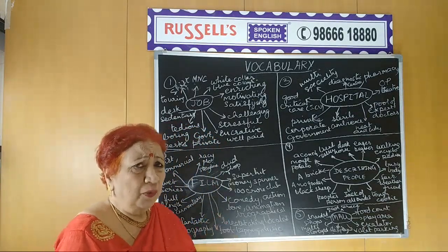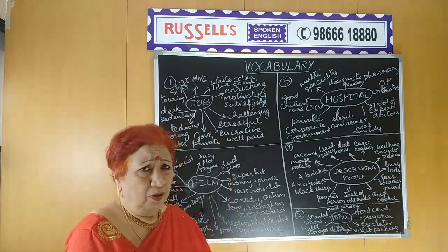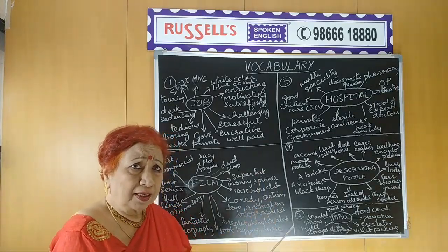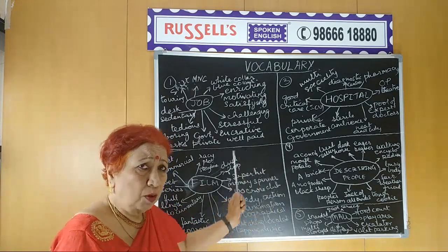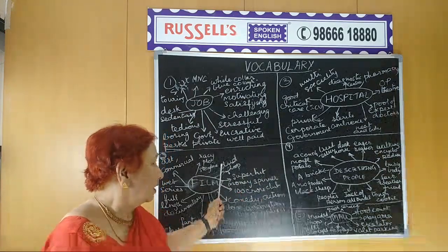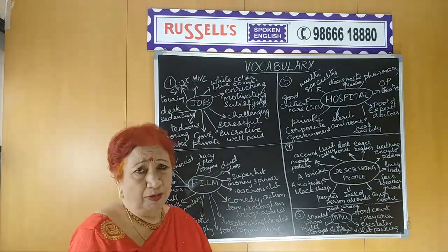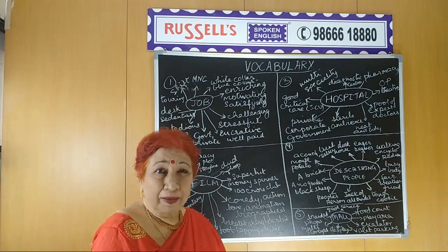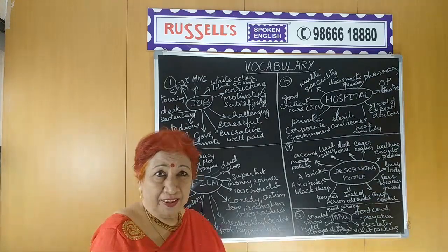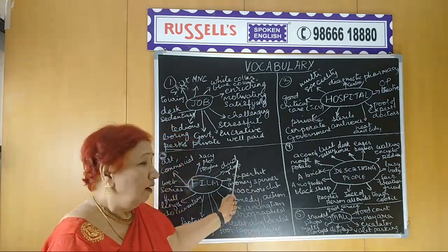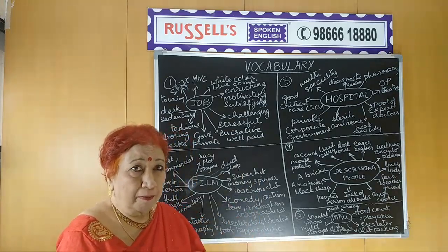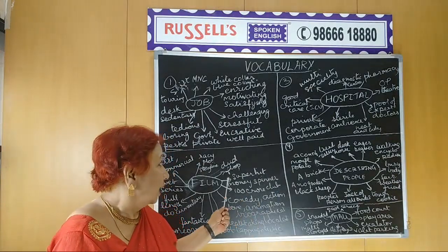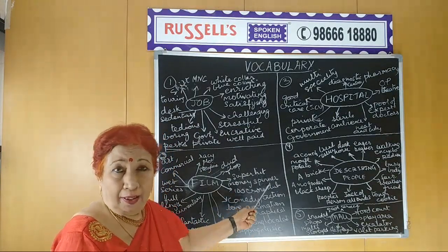Now let's go on to something lighter — describing a film or movie. What are the elements you look for in a movie? Well, first, a movie can be a dud or a flop — it didn't take off, didn't make money, didn't interest people, didn't strike a chord at the box office. The crowds dwindle even after the very first day.